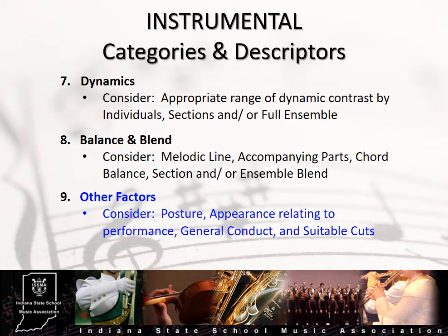The final category, other factors, provides the adjudicator an opportunity to evaluate and assess some of the logistical or aesthetic areas of the performance not wholly related to elements contained in the music. Some of the descriptors include posture, appearance relating to performance, and general conduct. It is important for an adjudicator to be both orally and visually observant during the performance, as often what you see visually can go a long way in helping explain what you're hearing. This category also offers an opportunity to evaluate the appropriateness of the literature selected for performance, and of any cuts that are made in the music, and their effect on the overall presentation.